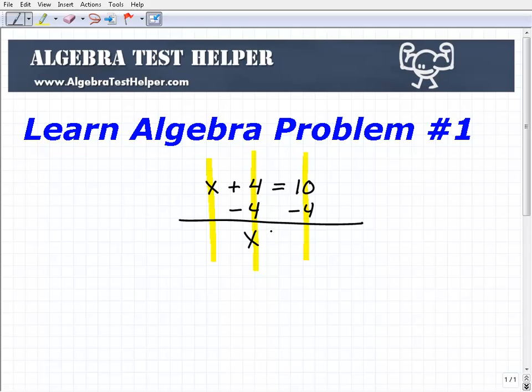So I have x equals 4 plus negative 4, or 4 minus 4, which is 6. So x equals 6 is the solution.